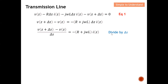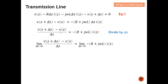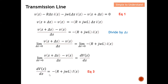Next, I divide both sides by delta-z. The delta-z on the right-hand side cancels, giving a simplified equation. Then I take the limit as delta-z approaches zero. On the left-hand side, this expression can be replaced by dV(z)/dz. Substituting that in, I obtain Equation 3. Everything without a delta-z term remains intact.